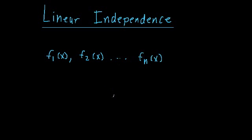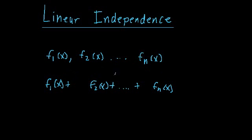In order to figure that out, we first need to do one quick test. We need to form what is called a linear combination, which means we take all of our functions and add them together, multiplying each by its own constant: c1 times f1 of x, plus c2 times f2 of x, plus c3 times f3 of x, all the way up to cn times fn of x. This is called a linear combination — we multiply all of our functions by their own particular constant, or scalar, and add up all the results.